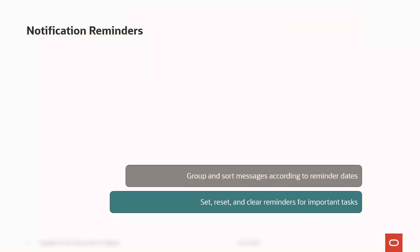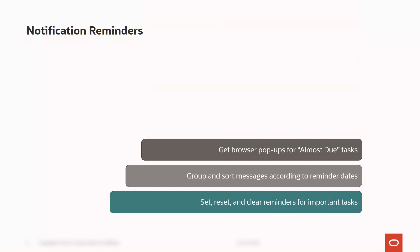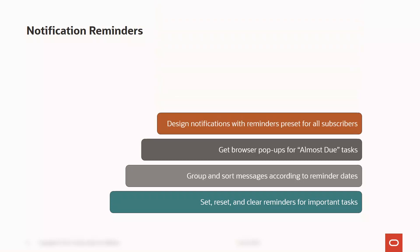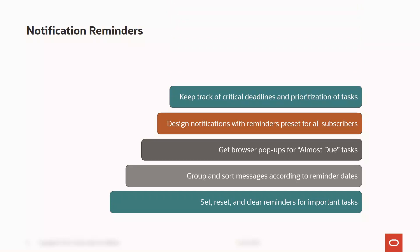Users can group and sort their messages in the message center according to reminder dates. Users can get browser pop-up messages for tasks that are almost due and even control the time interval of what almost due means. Notification designers can put a reminder on the notification itself so that all recipients have the reminder automatically set. All these capabilities add up to better visibility, control and prioritization of critical tasks, helping everyone get their job done with a watchful eye on deadlines and priorities.